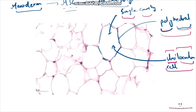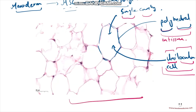White adipocytes are unilocular and polyhedral when observed in tissue. If a single adipocyte is isolated individually, it would be spherical rather than polyhedral, but still unilocular. So in tissue sections they appear polyhedral, while in isolation they are spherical.